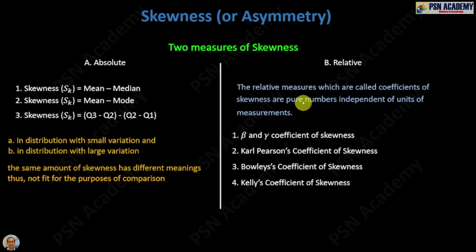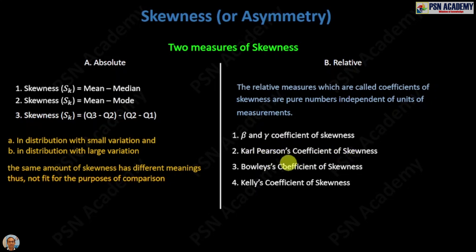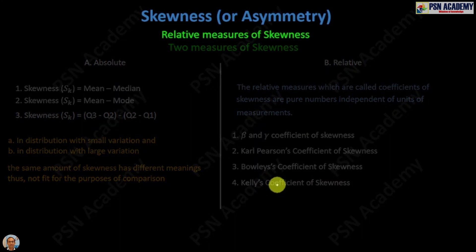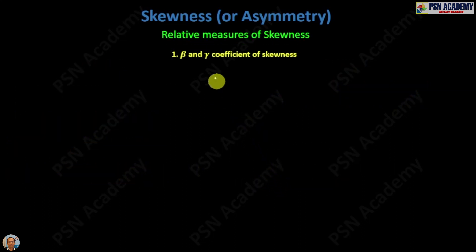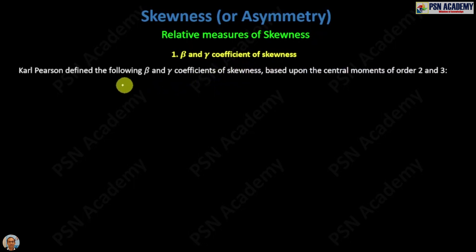For that reason we shift our focus to relative measures of skewness. There are four relative measures of skewness. In this video we will talk about the beta and gamma coefficient of skewness, and there will be three other videos on Karl Pearson's coefficient of skewness, Bowley's coefficient of skewness, and Kelly's coefficient of skewness.